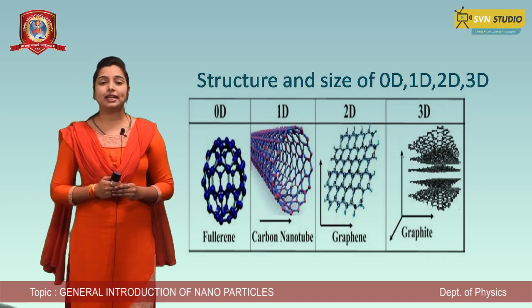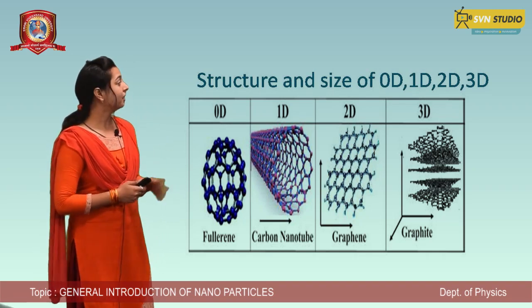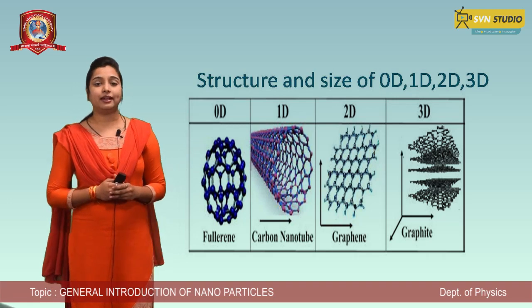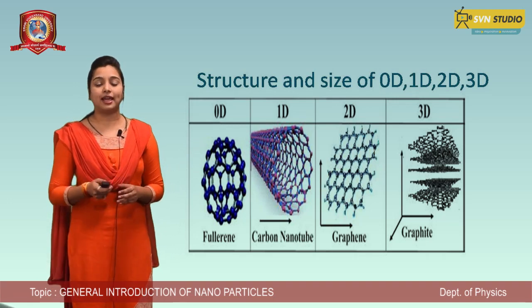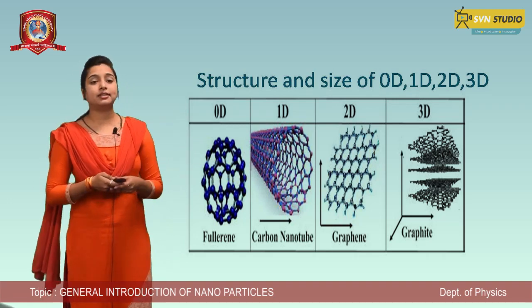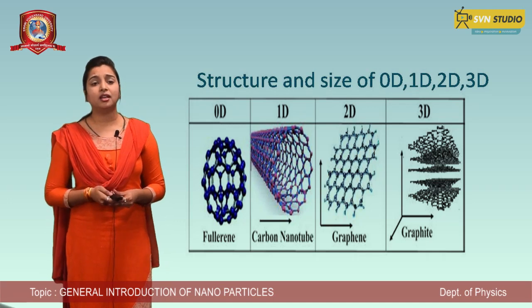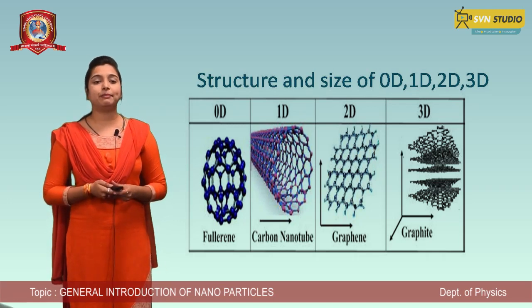The best example of a 0D nanoparticle is the semiconductor nanoparticle and fullerene. Fullerene is also called C-60, which exists in this form.